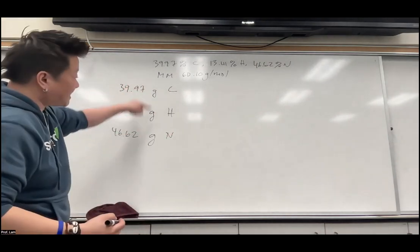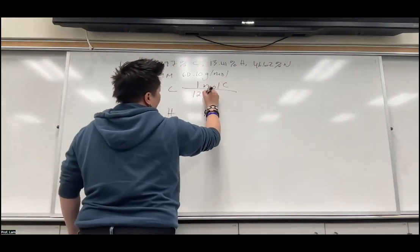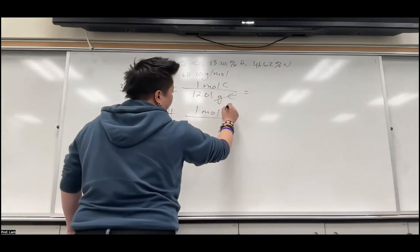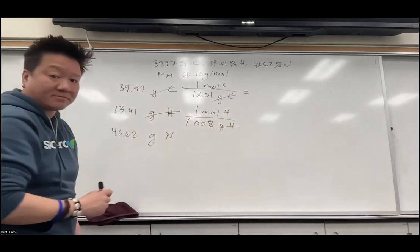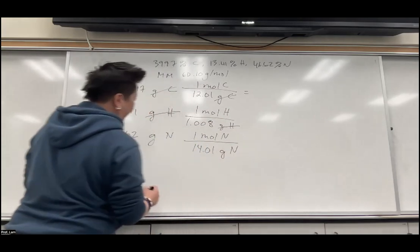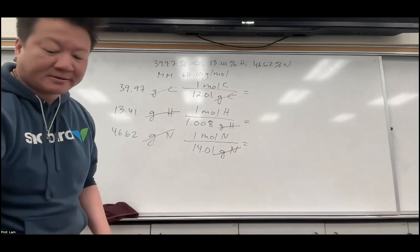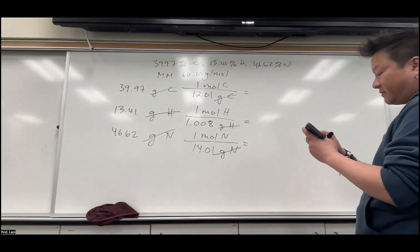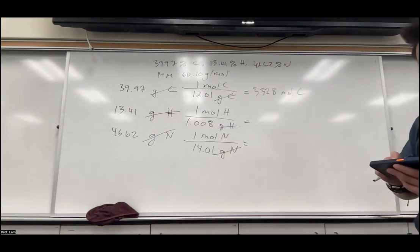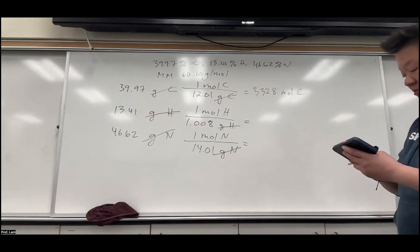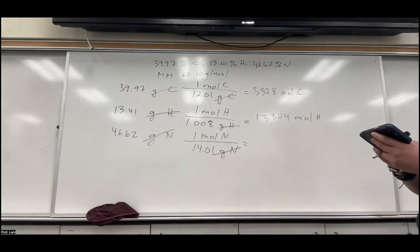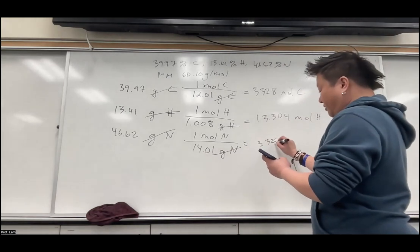Step two: take the grams and convert to moles. One mole of carbon over 12.01 grams of carbon from the periodic table. Set it up for hydrogen: one mole of hydrogen over 1.008 grams of hydrogen. And for nitrogen: one mole of nitrogen over 14.01 grams of nitrogen. Don't round too much — keep at least four sig figs. We get 3.328 moles of carbon, 13.304 moles of hydrogen, and 3.328 moles of nitrogen.